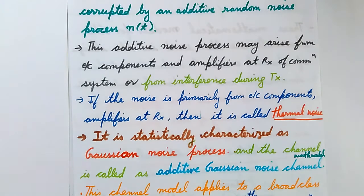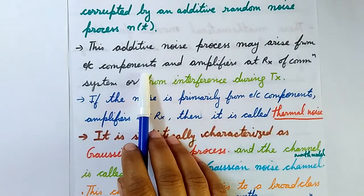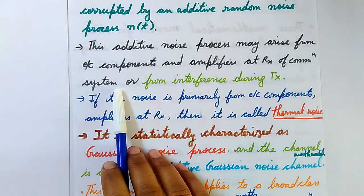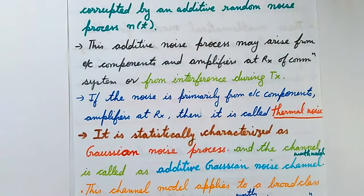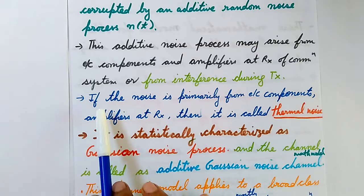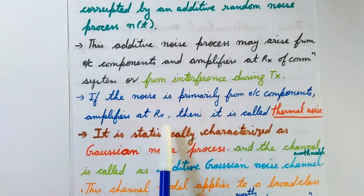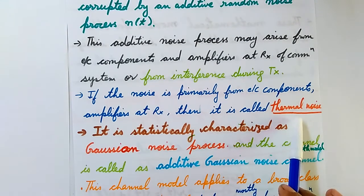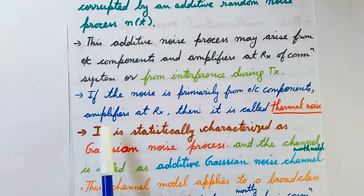This additive noise process may arise from electronic components and circuits present in the system, and from amplifiers used at the receivers of the communication system. Noise can also come from interference during the transmission process. If this noise N(t) is primarily because of the electronic components or amplifiers at the receiver, it is called thermal noise. Thermal noise is statistically characterized as a Gaussian noise process.